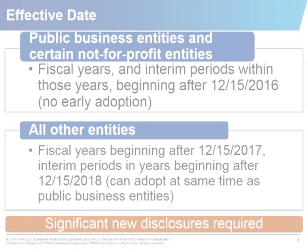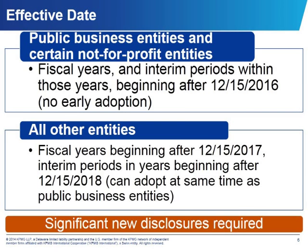Definitely some effort is involved. So how much time do companies have to start thinking about this? For public business entities and certain nonprofit entities, the standard will apply for annual periods and interim periods after December 15, 2016. For all other entities, application will be deferred by one year — so 2017 for public business entities, and the one-year deferral for others.